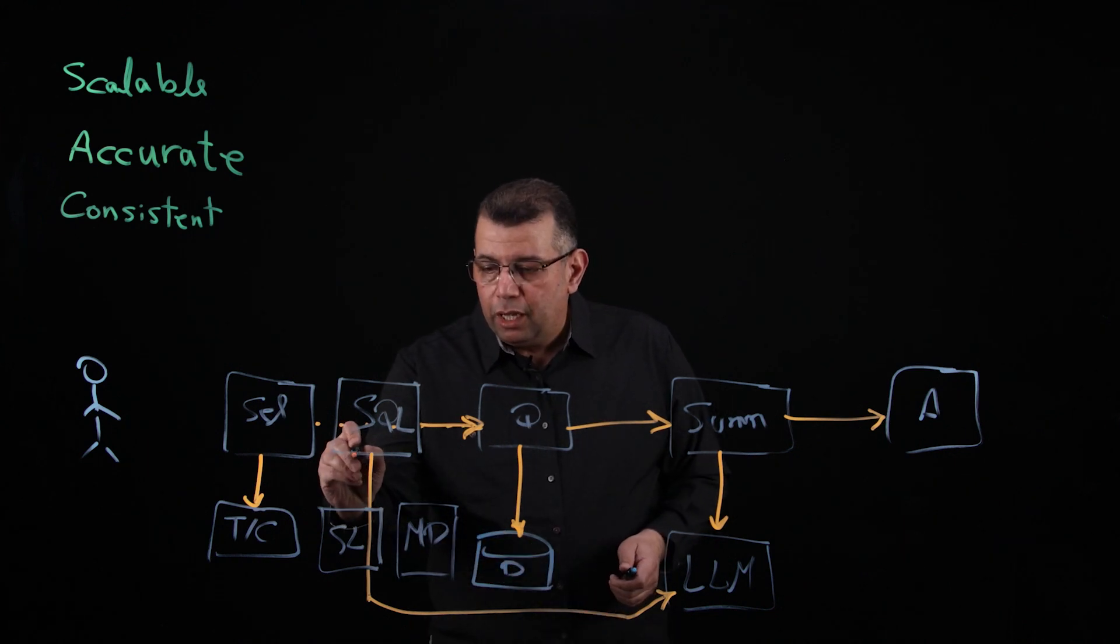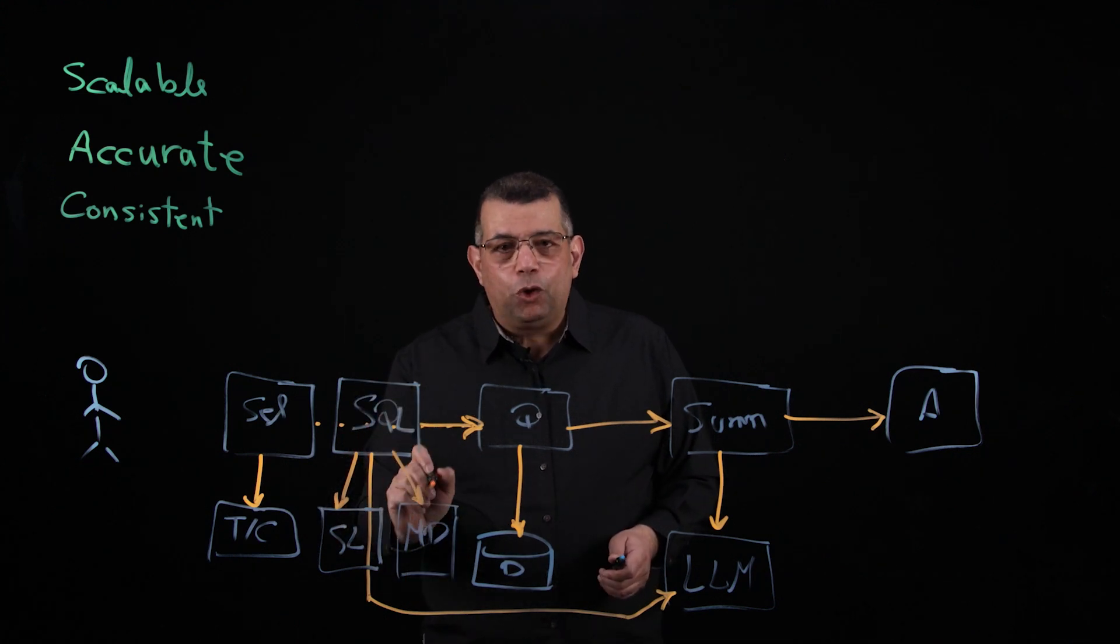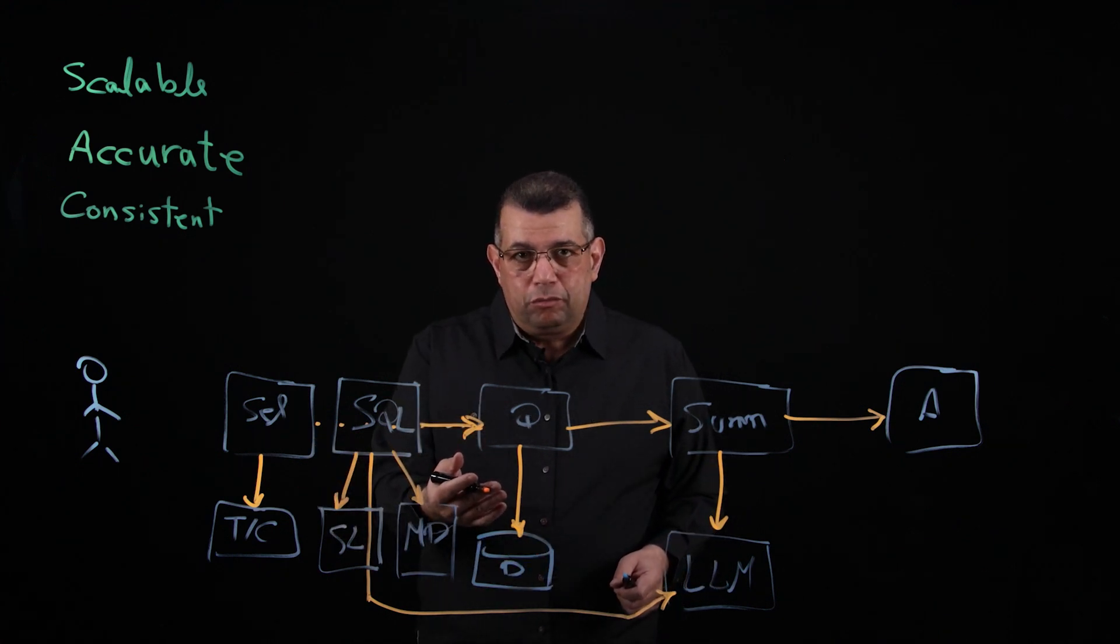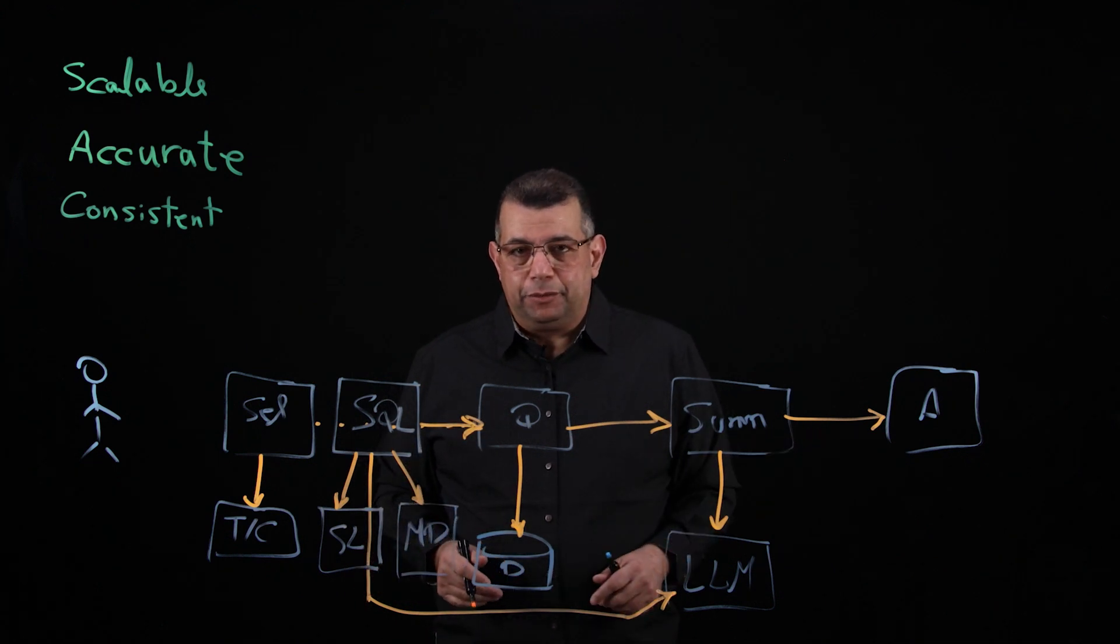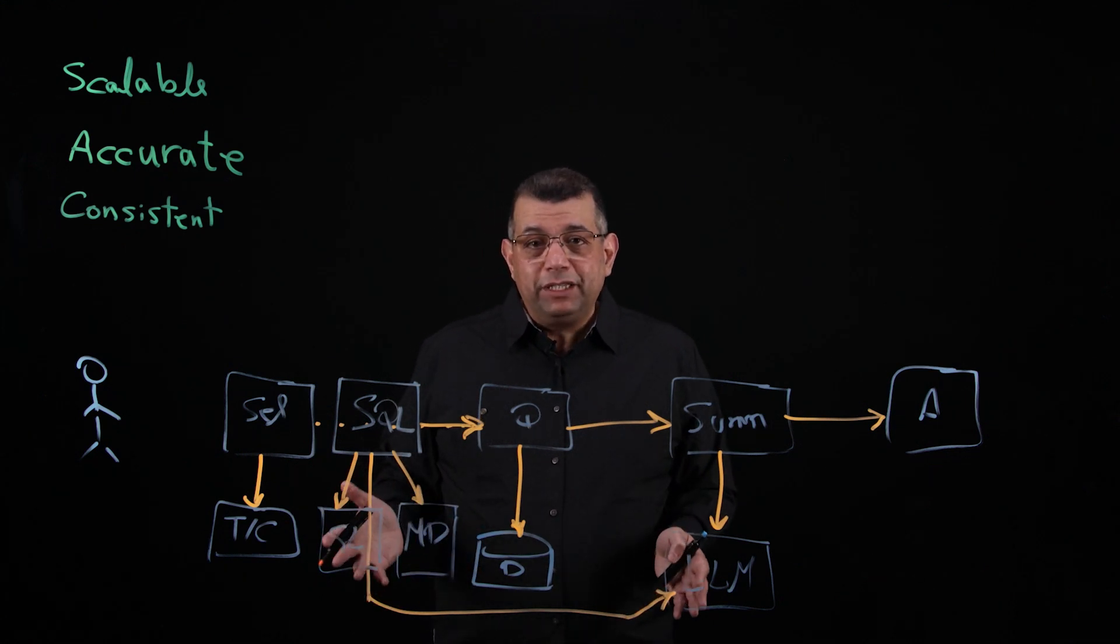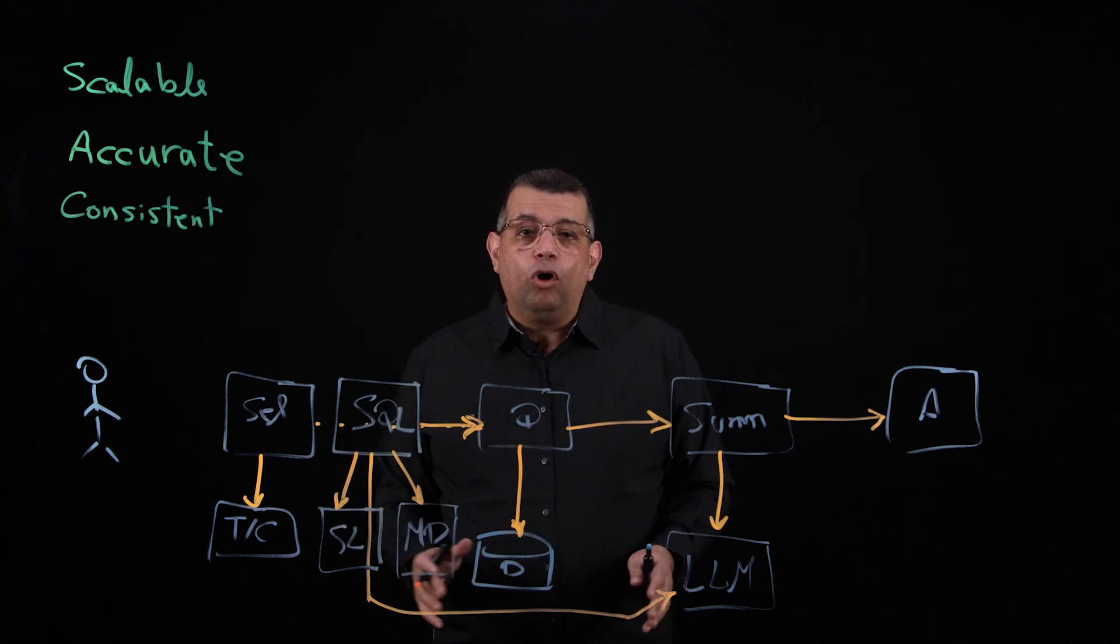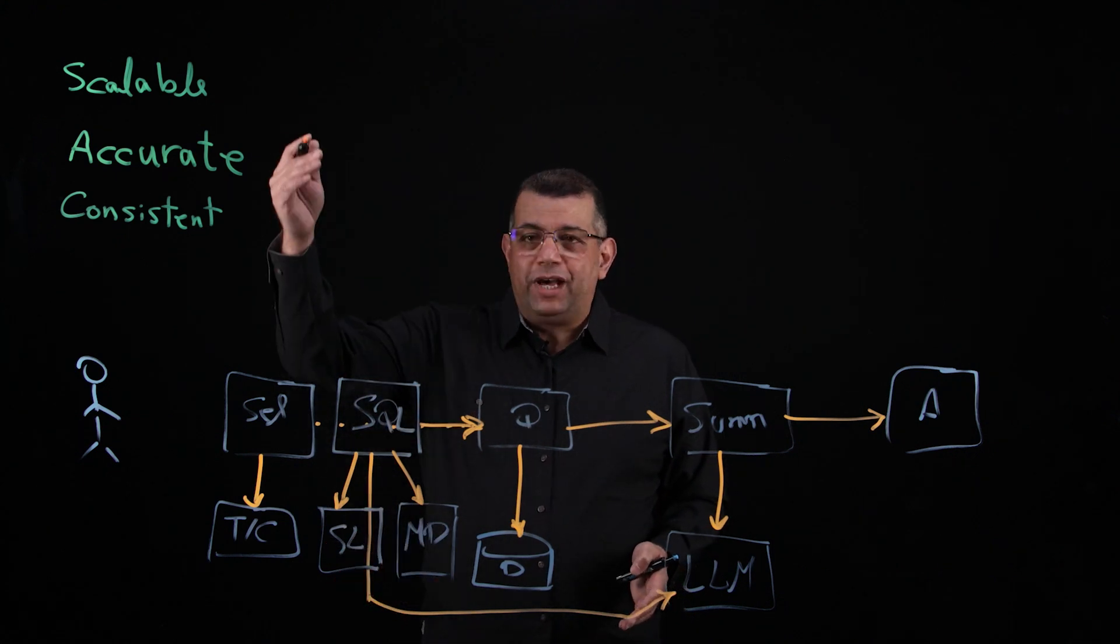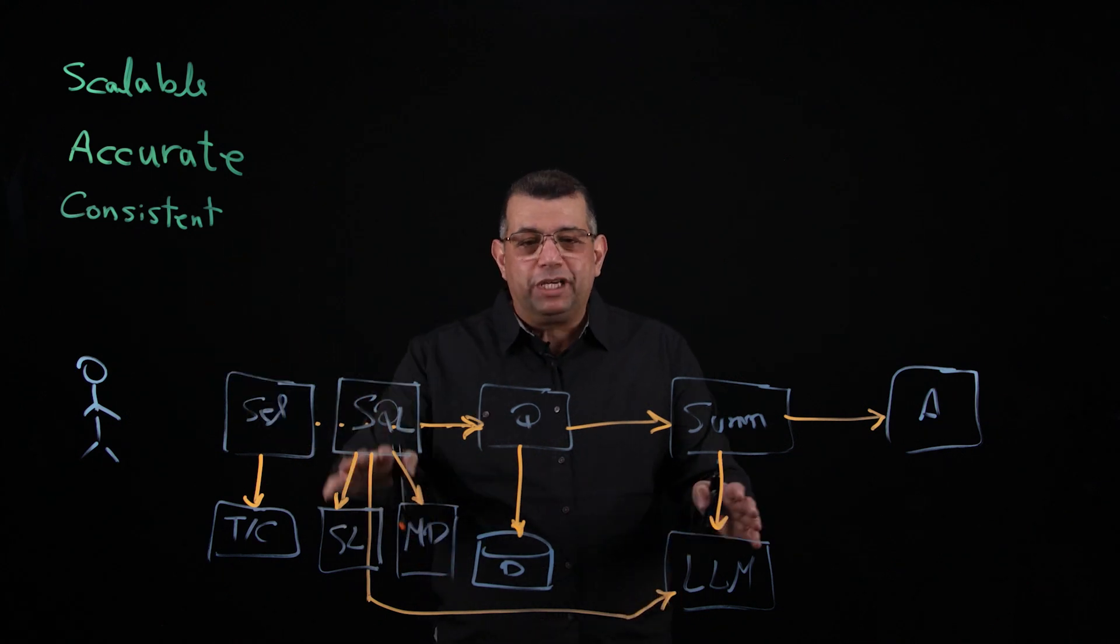So by using the semantic layer and the metric definition, we can pass specifically what's required to answer the question to the large language model, get the relevant query that now is a lot more relevant to our question and our business, and get the answer. At the same time, metric definitions, when they are published to a centralized metric definition catalog, that catalog will make them available to all of your users in the business. And hence, it will add the consistency. So now we have added the scalability, the accuracy, and the consistency by combining those techniques together.